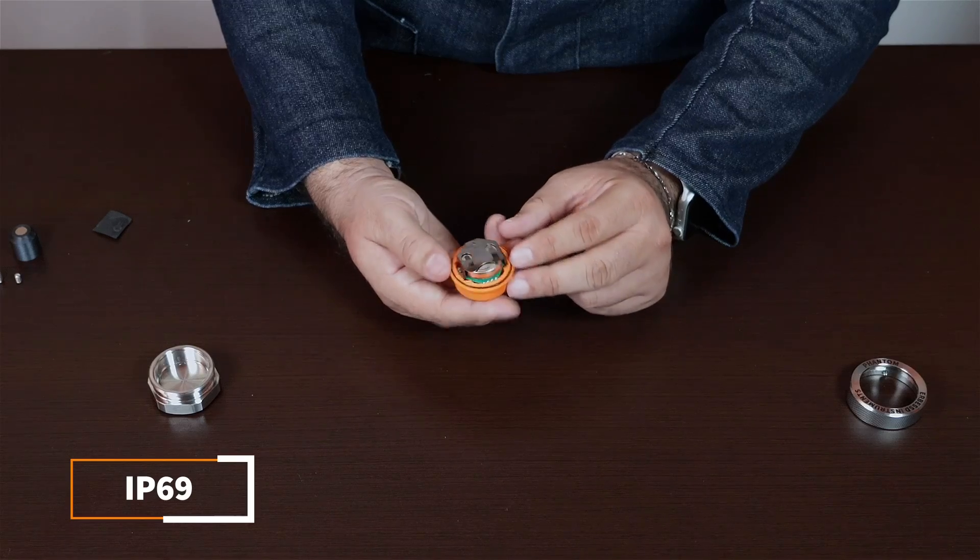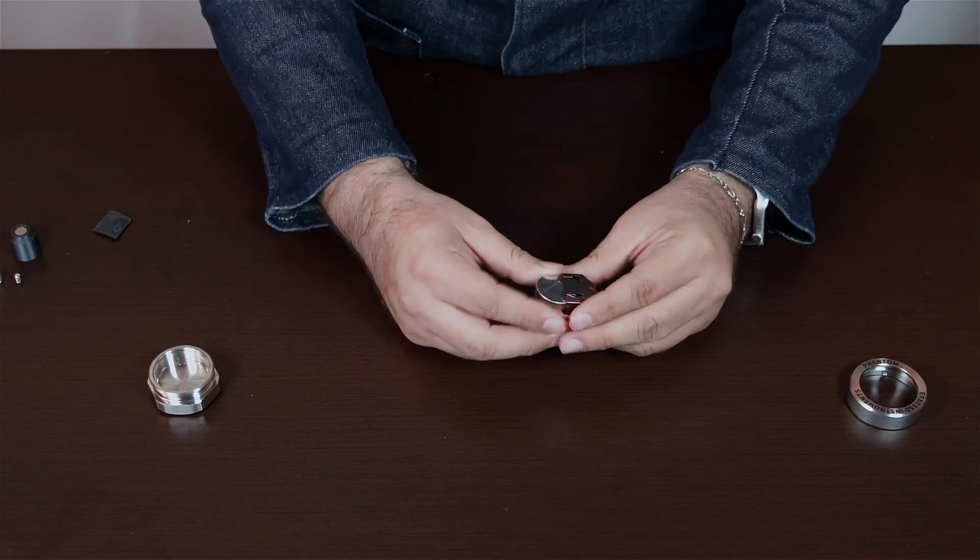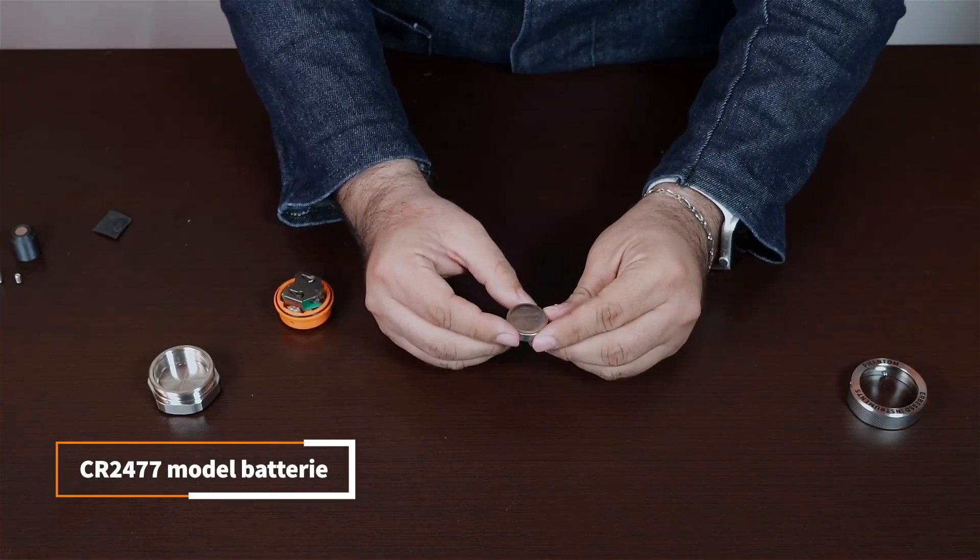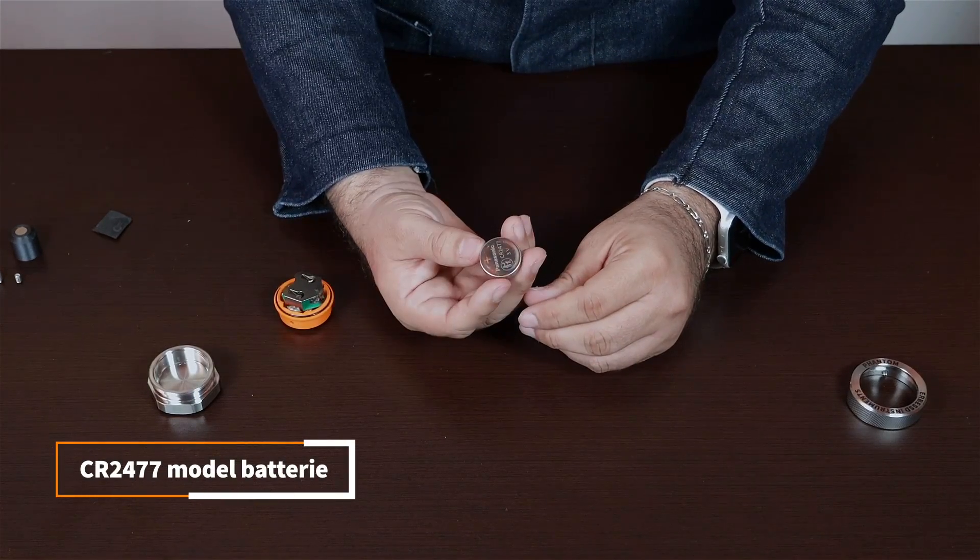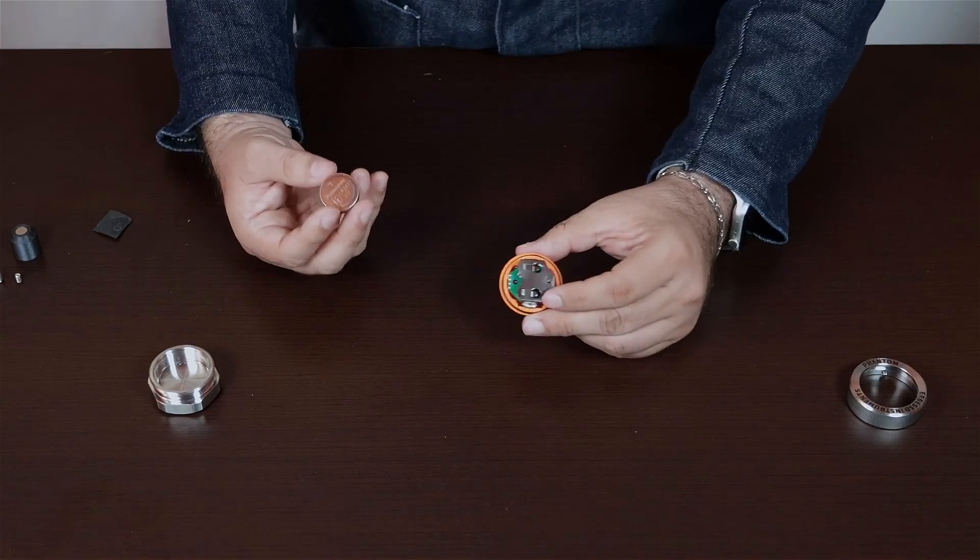The battery is very easy to replace. Just push it with your fingers, remove the battery, and you'll see it's a CR2477 model. These batteries are very accessible and easy to find. And as you can see, they're also very easy to replace.